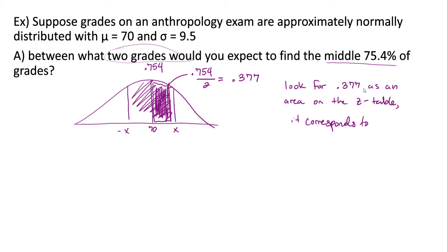It turns out 0.377 is on the z-table and corresponds to z = 1.16. Since this is a middle piece of area, we also have z = −1.16. However, we're not finished, because the question asks between what two grades — not what z-scores. So we need to find specific grades.